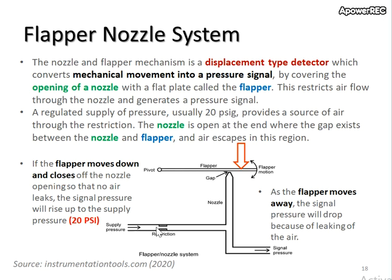This is the restriction, and we have the nozzle here. Above the nozzle there is a flapper. The flapper is attached to a pivot, which means the flapper can move up and down, thus opening and closing the nozzle.